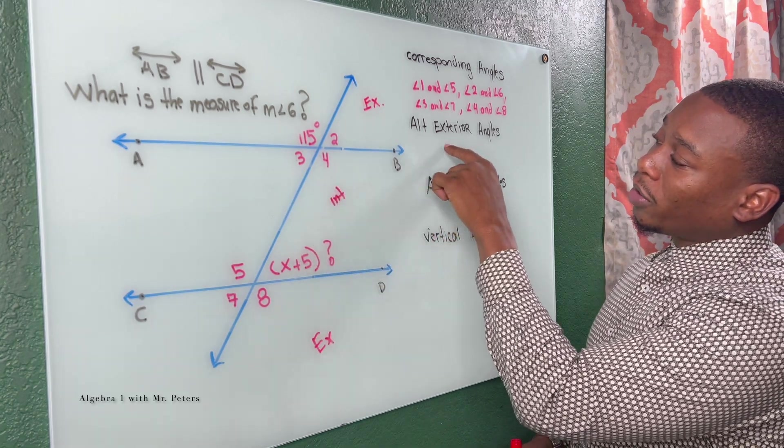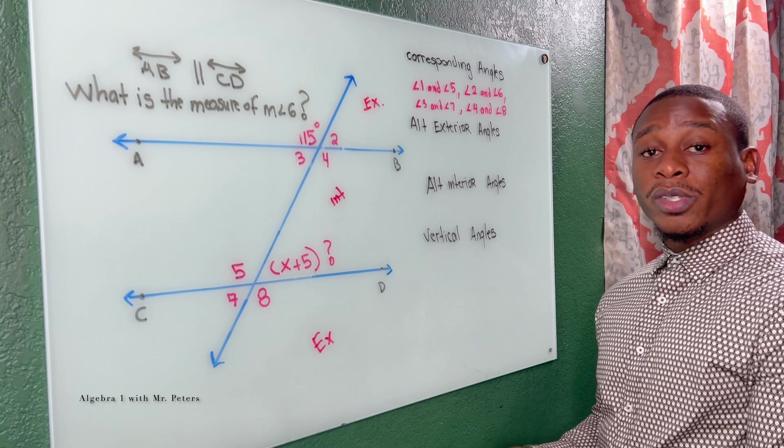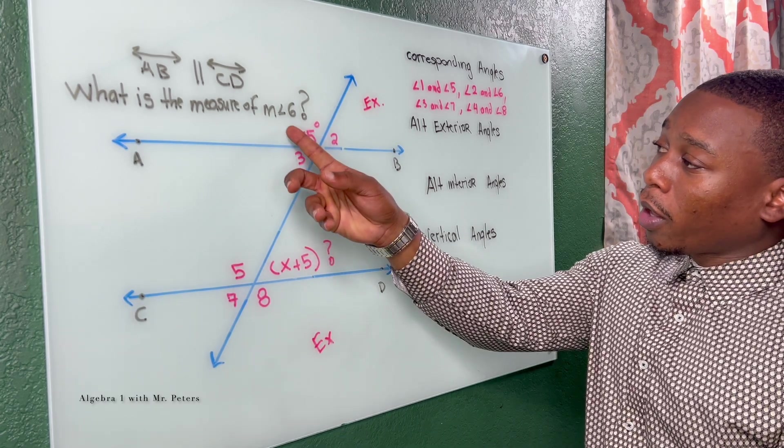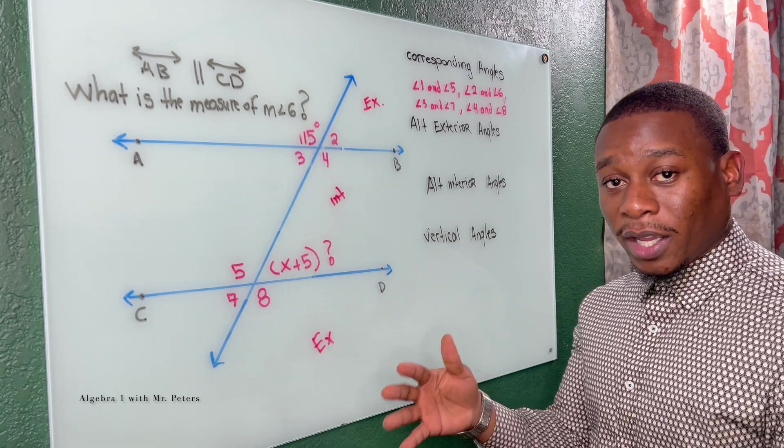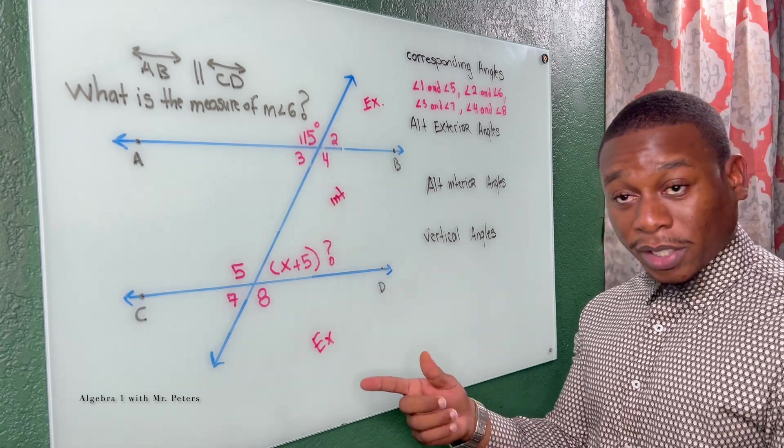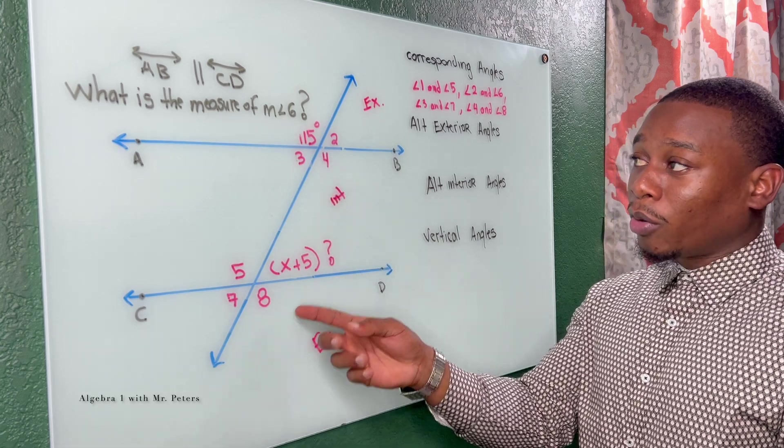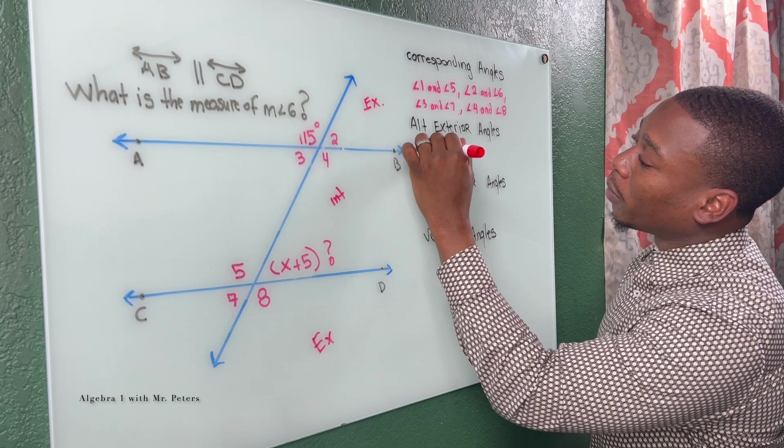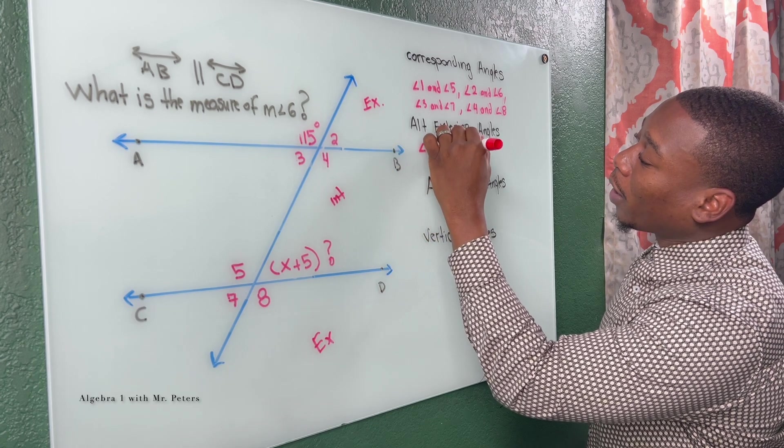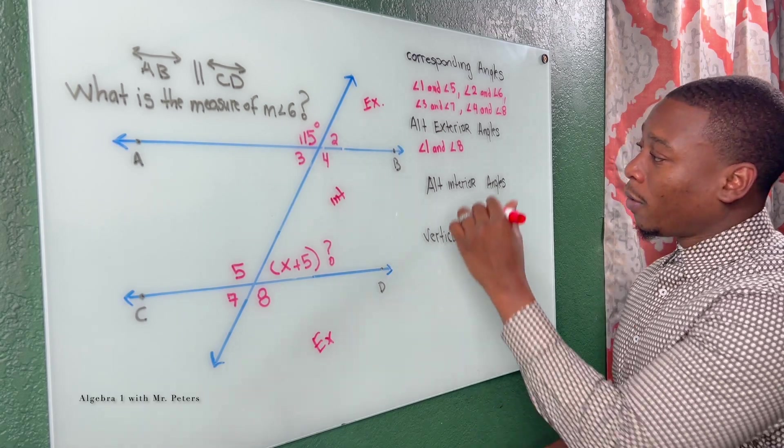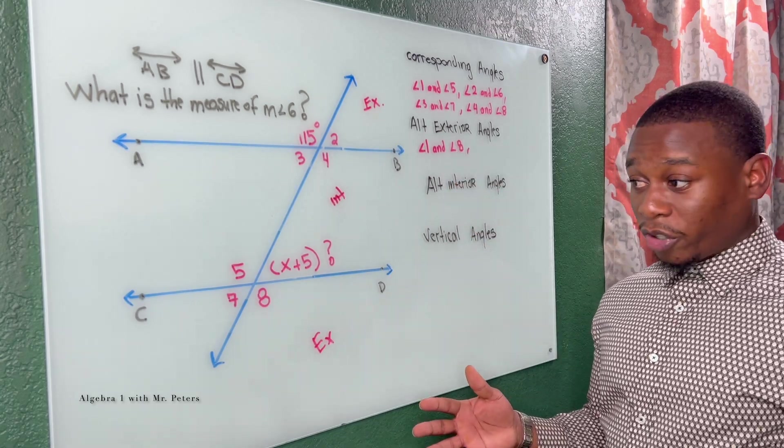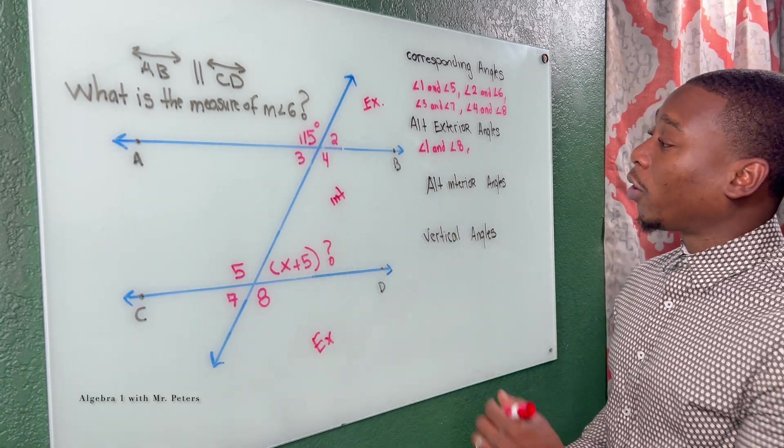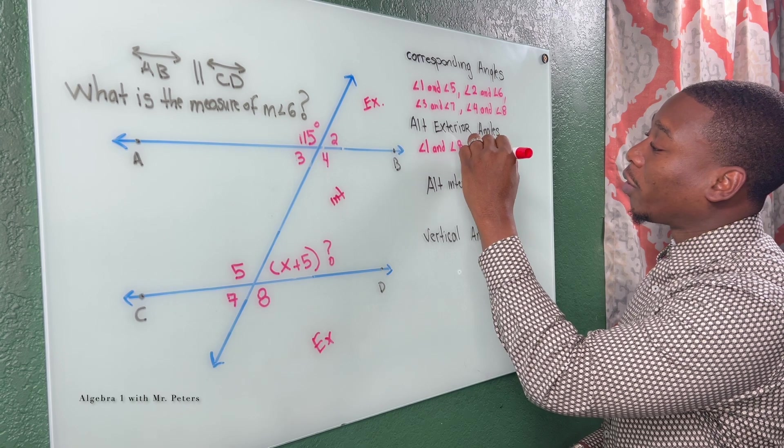So when we go to alternate exterior angles, all we're saying is angles on the opposite side of the transversal are equal. So angle one and angle eight will be alternate exterior angles. They're on the opposite side of this transversal, and they're both external angles. So I'll say angle one and angle eight are alternate exterior angles. Then we look at our other two exterior angles, angle two and angle seven, another pair of alternate exterior angles.